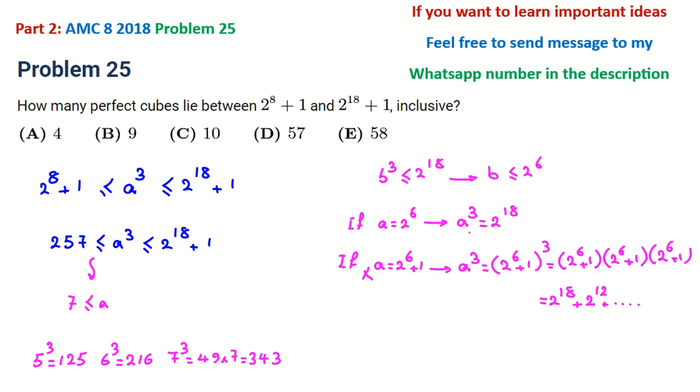But a = 2⁶ works, while 2⁶ + 1 doesn't work. From here we can conclude a is at most 2⁶.